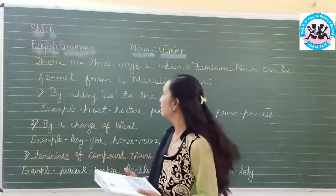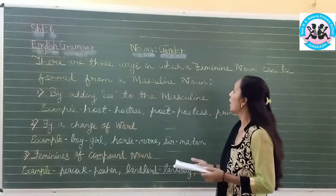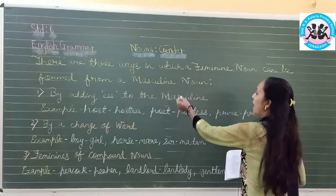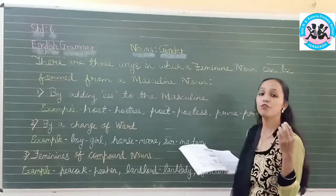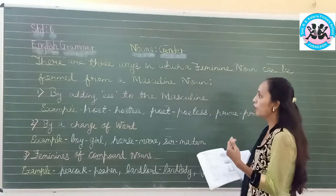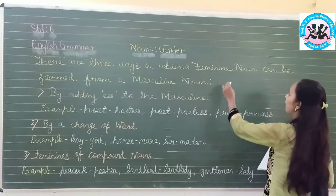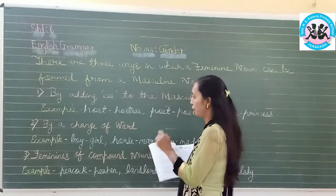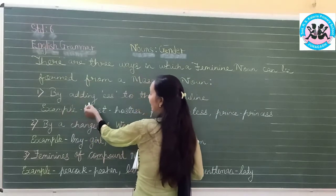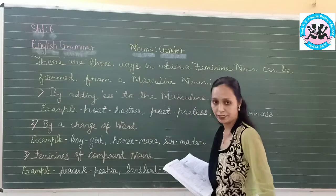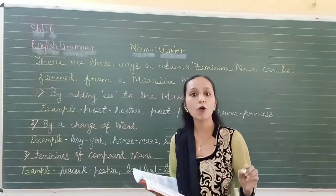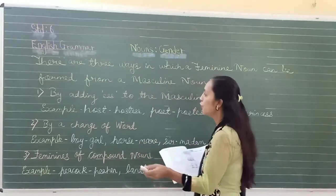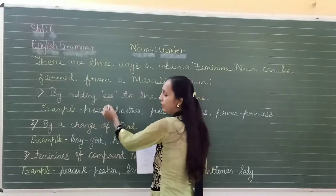Now we will see that there are three ways in which a feminine noun can be formed from a masculine noun. There are three ways. Let us look at all the ways one by one. The first way is by adding -ess to the masculine noun.